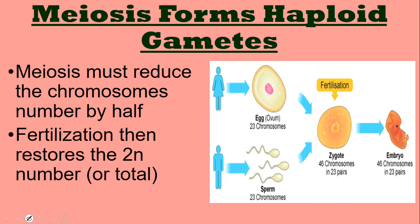A little more about meiosis: meiosis must reduce the chromosome number by half. We do that because half of your genetic material comes from your mother and half comes from your father. Your mother can only give half the number of chromosomes and your father can only give half. Fertilization then restores the number to 2N — so 23 plus 23 equals 46 — ensuring the organism still has the right number of chromosomes for the species.